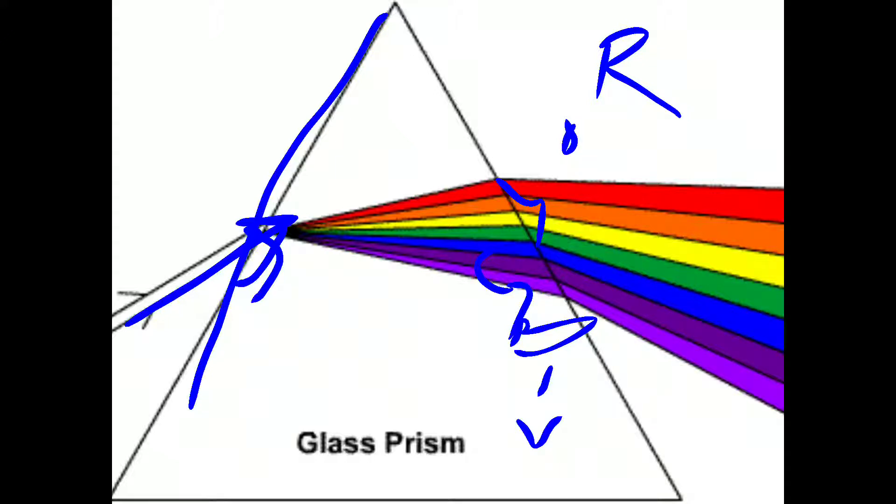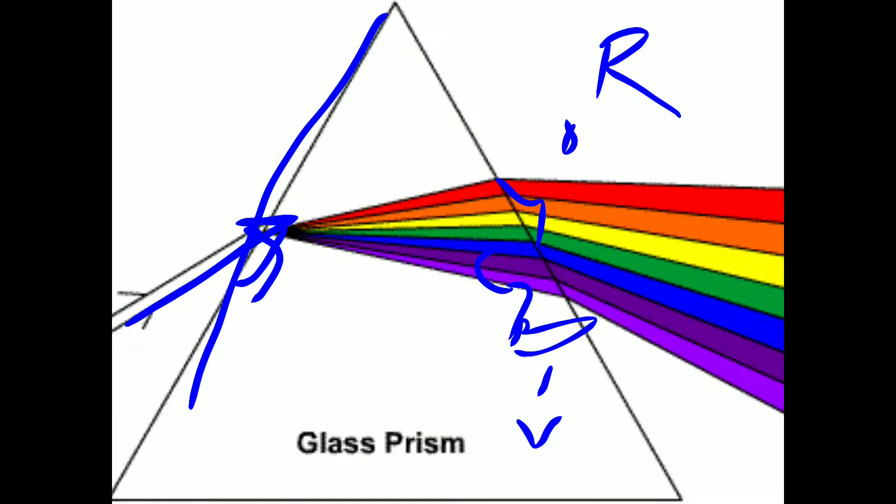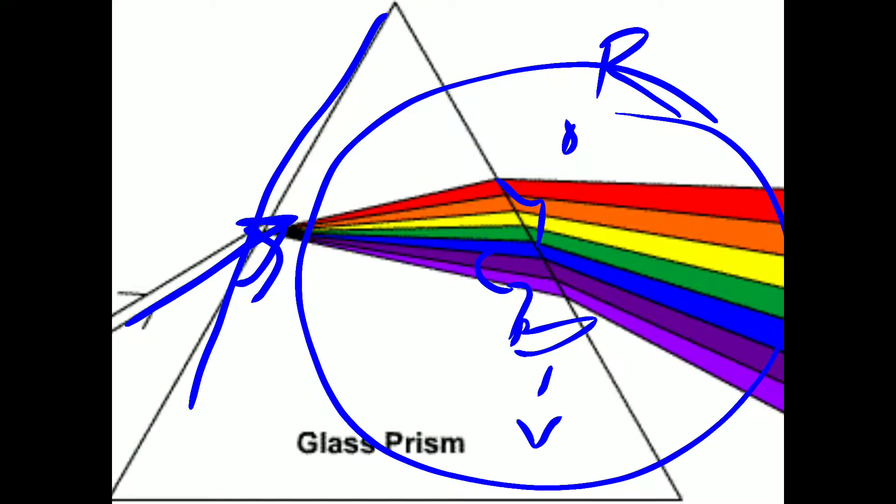White light has seven colors. When white light passes through a prism, this splitting up of white light of the sun into seven constituent colors is called dispersion of light, and we call it spectrum.